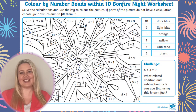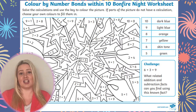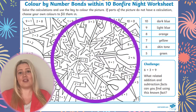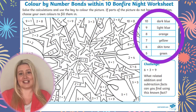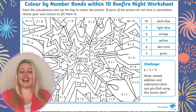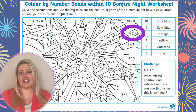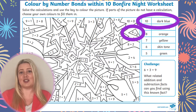To complete this activity, learners need to solve the number bond calculations which make up the picture. When they've solved a problem, they need to find the answer in the answer key to know which colour to colour that section of the picture. For example, in the calculation 4 add 6 with the answer 10, learners can see that the section needs to be coloured dark blue.